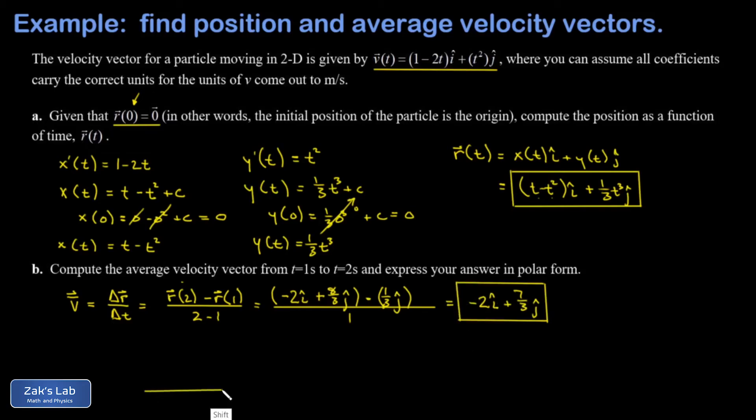To get the polar form we draw a triangle. So I have a leftward pointing component of negative two i hat, so that leftward vector has a magnitude of two. I have an upward pointing component with a magnitude of seven thirds. There's my average velocity vector, and we're going to label an angle with respect to the horizontal here in order to indicate the direction.